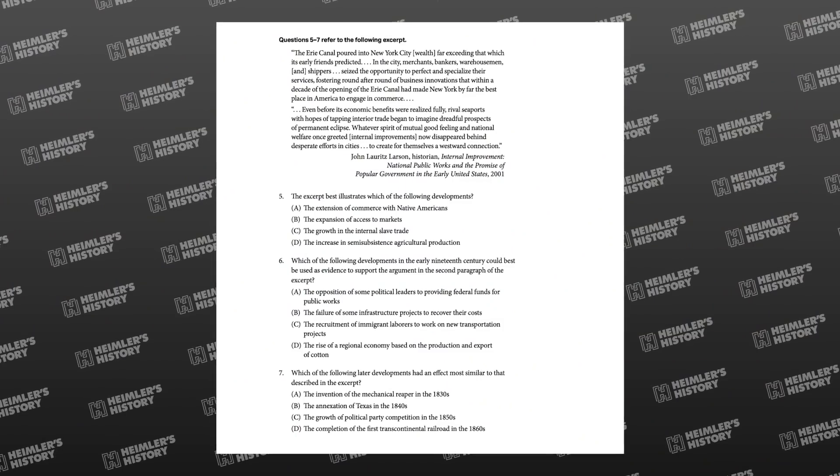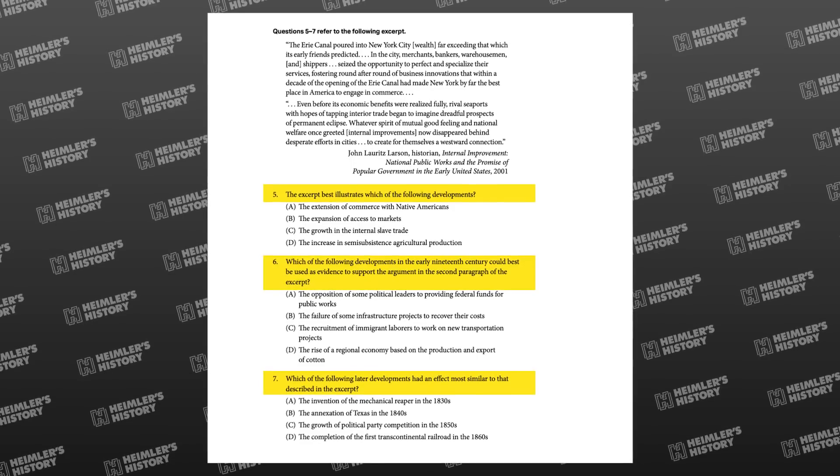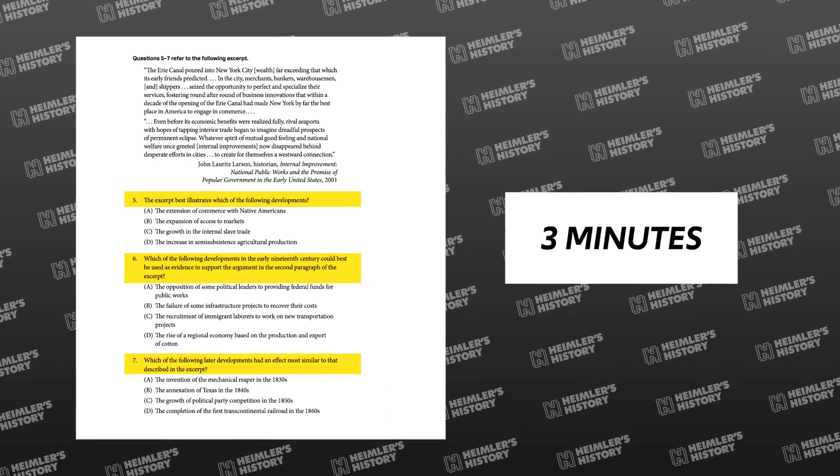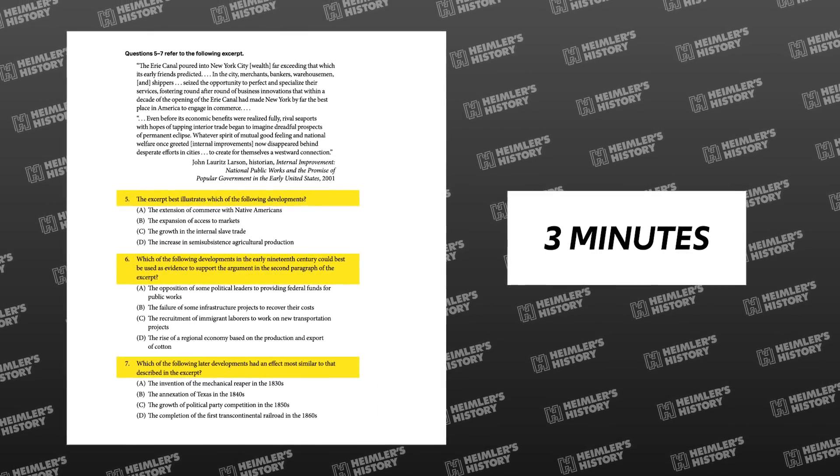Now that advice is complicated a little by the fact that the multiple choice questions are stimulus-based, which means that you'll be using part of that time to read the passage or interpret the image. But here's the way you manage it. In general, every stimulus has two to four questions attached to it. So for example, if you have a stimulus that has three questions, then you know that you can devote three minutes to it, including the time it takes to interpret the stimulus. So you can keep track of that time on the timer included in the digital testing app, or you can do it with some other timekeeping device.